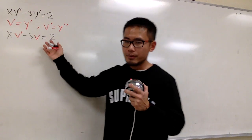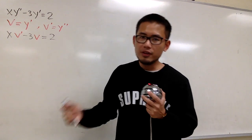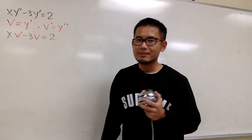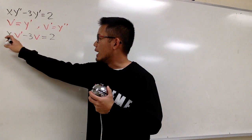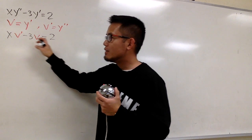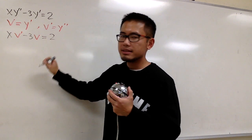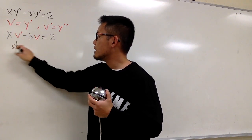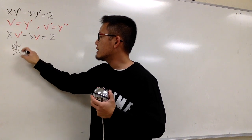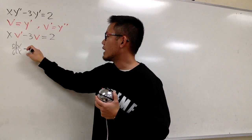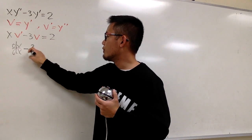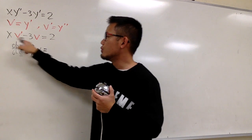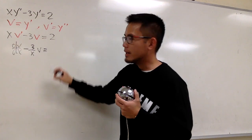Let's solve it the usual way — solve for phi first, then at the end we'll solve for y. I'm going to divide everything by x and write this as dφ/dx. We get negative 3 over x times φ, and this equals 2 over x.